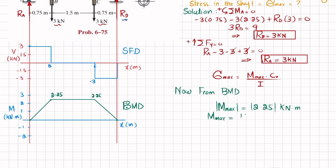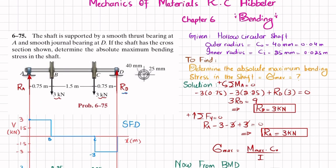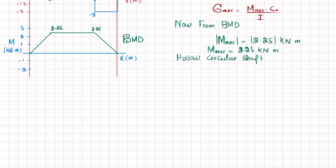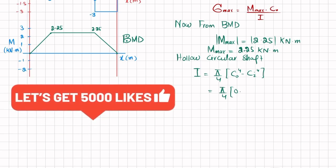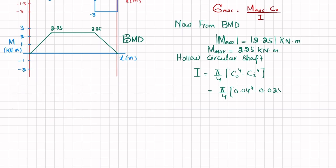The maximum bending moment is 2.25 kN·m. We have been given a hollow circular shaft with outer radius 0.04 meters and inner radius 0.025 meters. The second moment of inertia for a hollow circular shaft is I = (π/4)(c_outer⁴ − c_inner⁴). Substituting: I = (π/4)(0.04⁴ − 0.025⁴). The value c_outer is the maximum distance from the neutral axis, which is 0.04 meters.